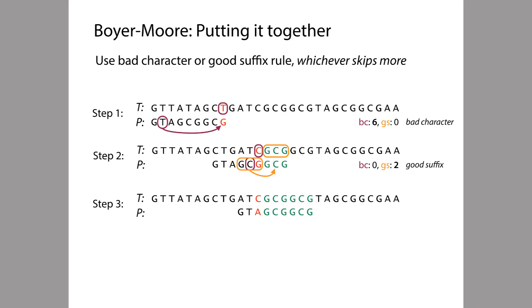So in the next alignment, the bad character rule will skip two alignments, where the good suffix rule will skip seven alignments. So we're going to take the good suffix rule, and that gets us to this point here.